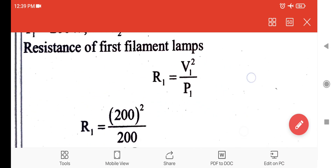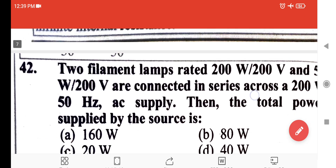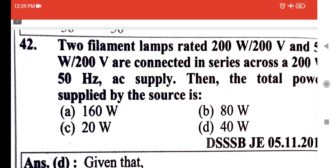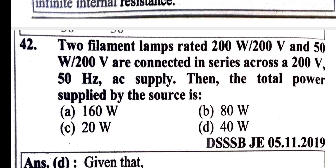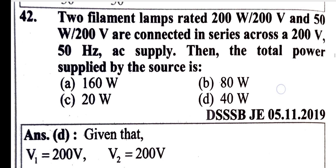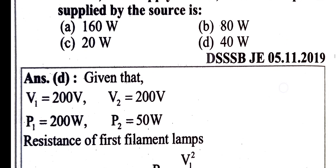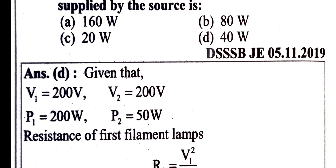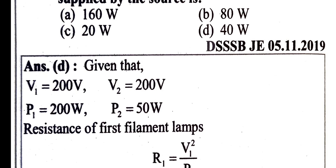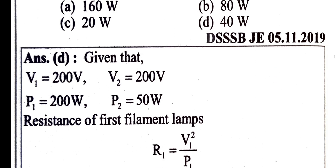The next question involves two filaments: 200 watt at 200 volt and 50 watt at 200 volt, connected in series across 200 V, 50 Hz. Total power? V1 is 200, V2 is 200, P1 is 200 watt, P2 is 50 watt. First filament resistance R1 equals V1² by P1.